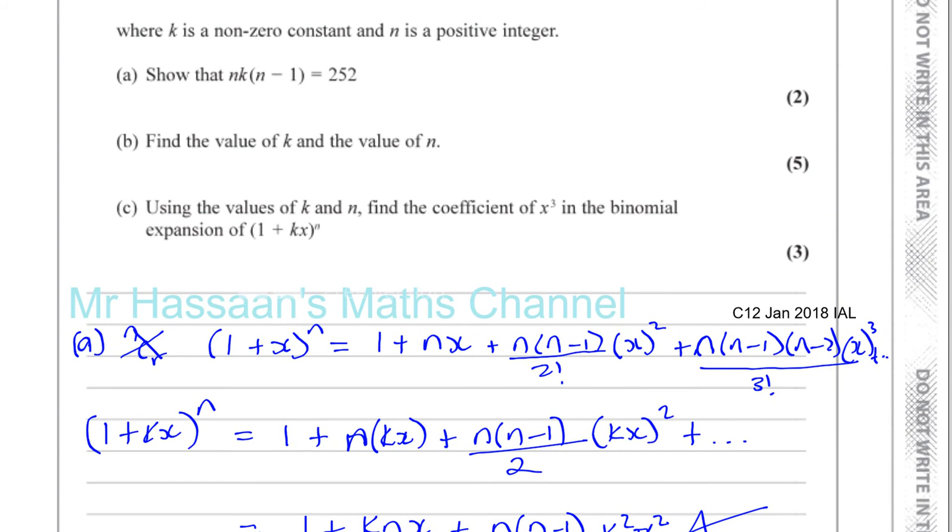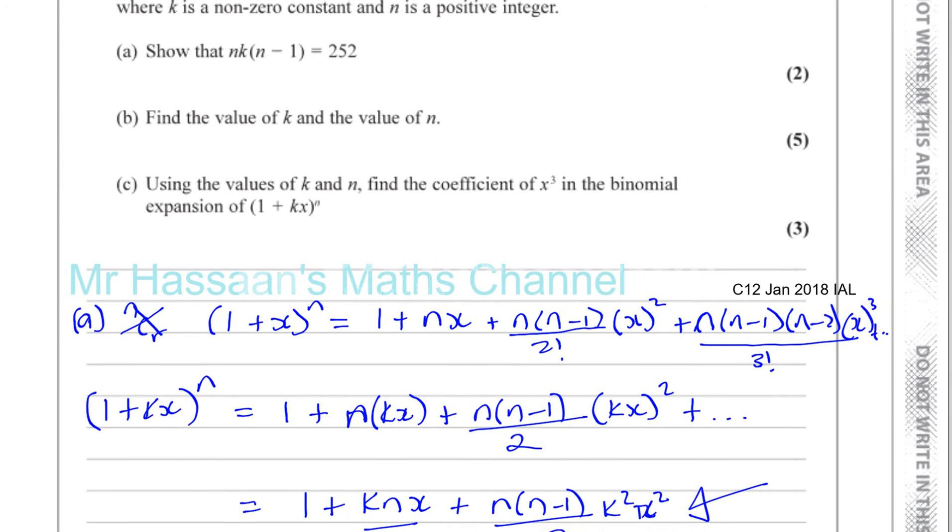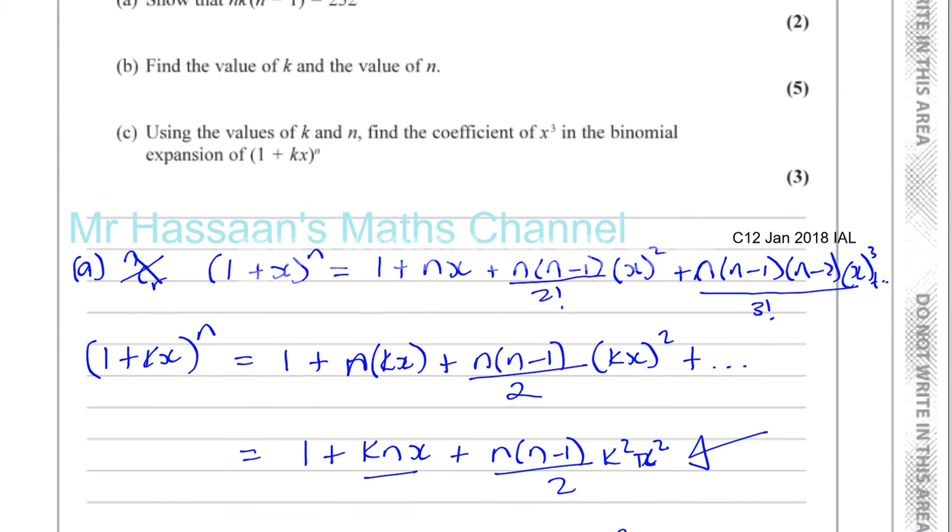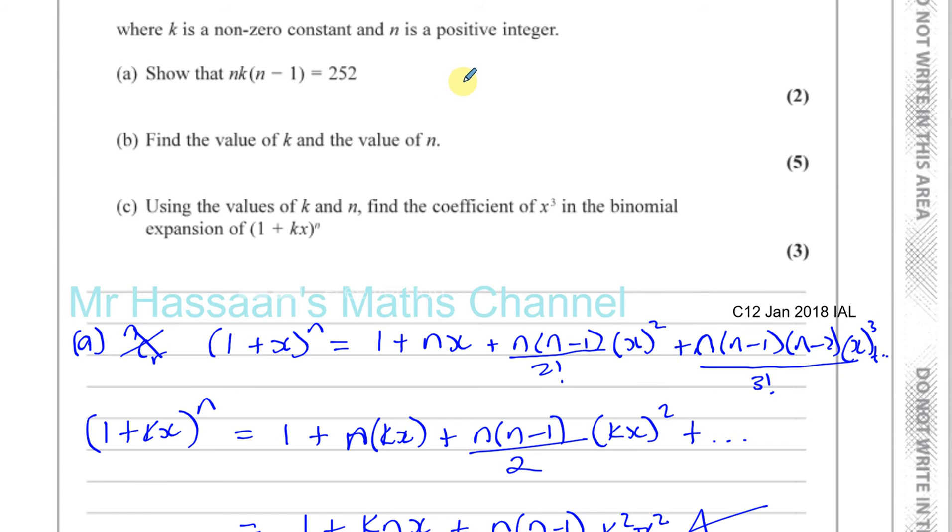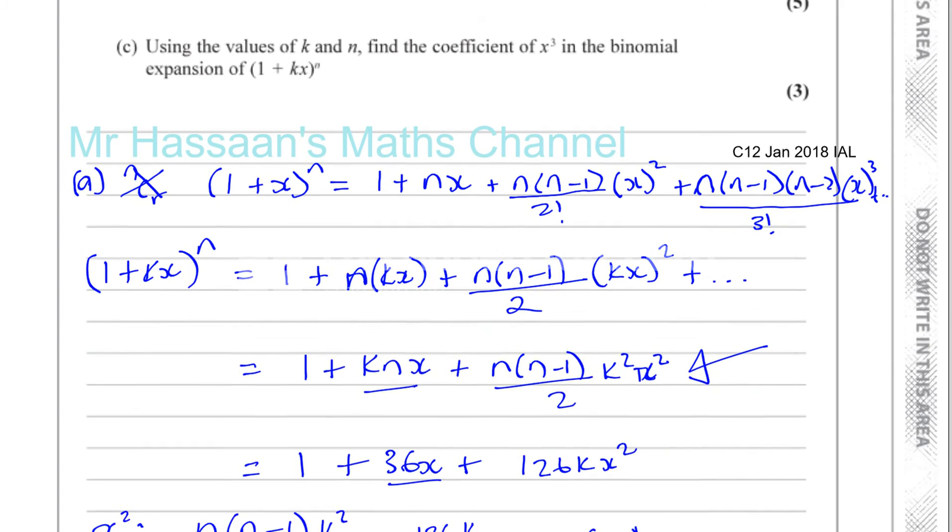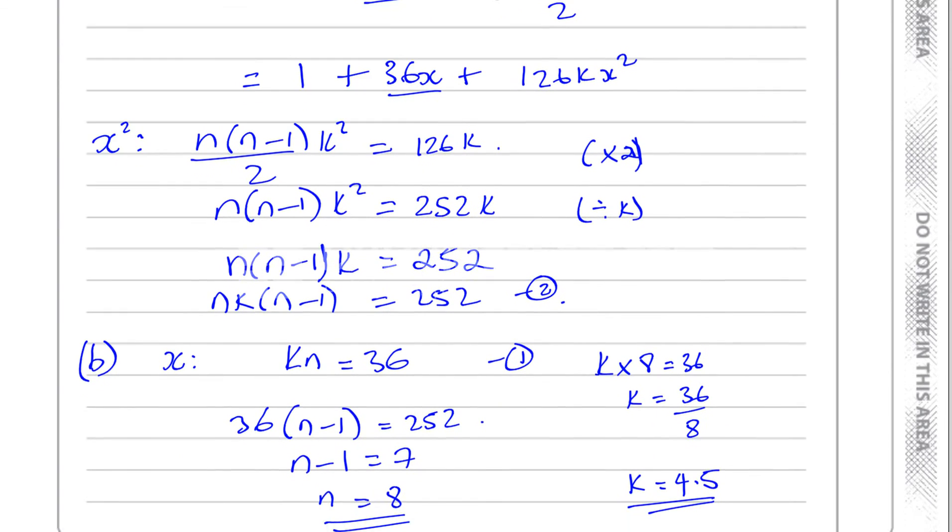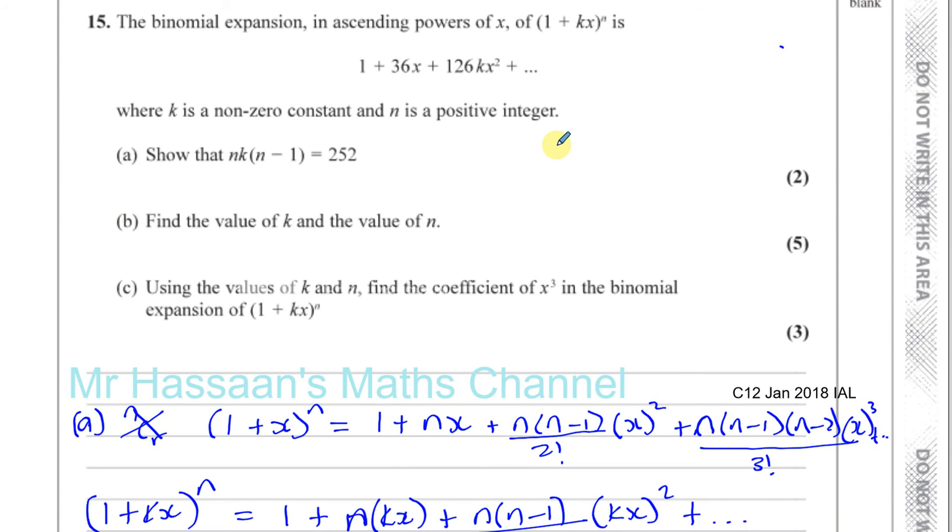And then it says, using the values of k and n, find the coefficient of x cubed in the binomial expansion of 1 plus kx to the power of n. So, I'll just do this up here. Really, you should do it in the other page. So, we know that n is equal to 8. So, I can write this as 1 plus k, which is 4.5, which I'll write as 9 over 2 times x to the power of 8. And I want to find the x cubed coefficient. So, I just need this part of it here.